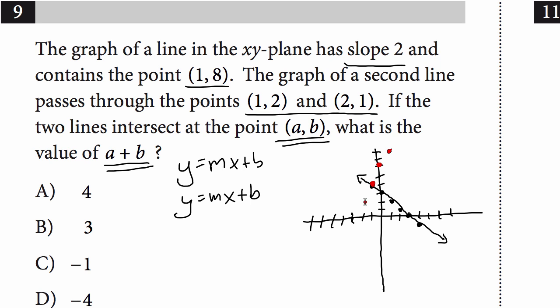All right, look at that. We already found our point of intersection. Our lines didn't even have to be perfect. So what is that point right there? That's (-1, 4). And when you add them together, a plus b, negative one plus four is three. You're done.